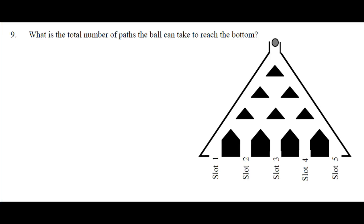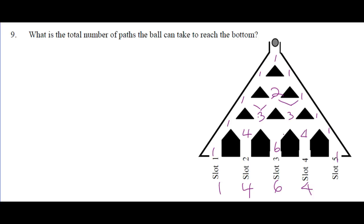Total number of paths a ball can take to reach the bottom. It hits and goes either left or right. Going along the edges there's only one way — the only way it gets to slot 5 is if every time it hits it goes right. To get to the middle slot there are 1, 1, 2, 1, 3, 1 at each level. Then 1, 4, 6, 4, 1. Total number of paths: 1 + 4 + 6 + 4 + 1 = 16 possible paths for the ball to reach the bottom.